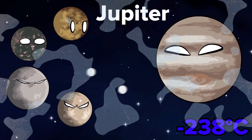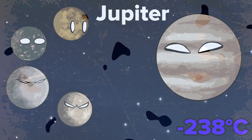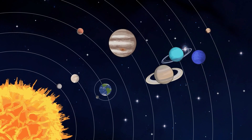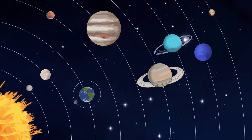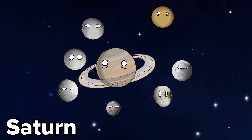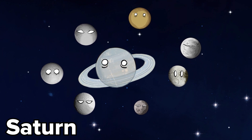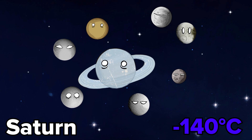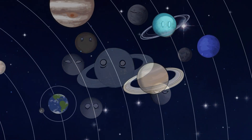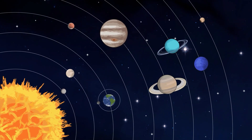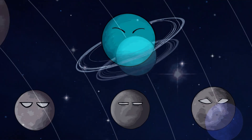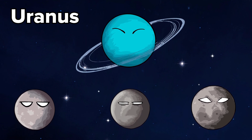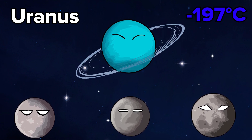Saturn: the temperature on the surface of Saturn is minus 140 degrees Celsius. Uranus: the temperature on the surface of Uranus is minus 197 degrees Celsius.